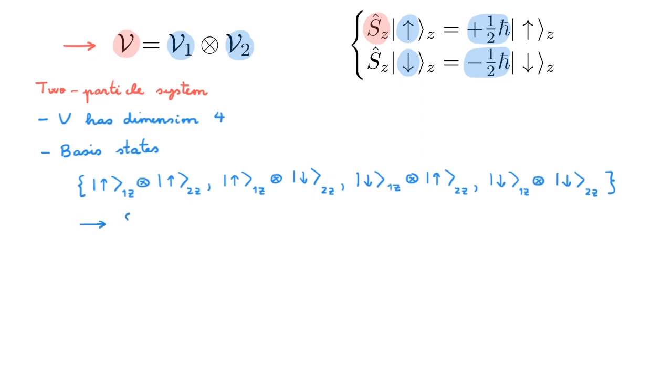Remember that we typically use a much simpler notation like this where the order of the arrows indicates to which of the single particle state spaces they refer to.